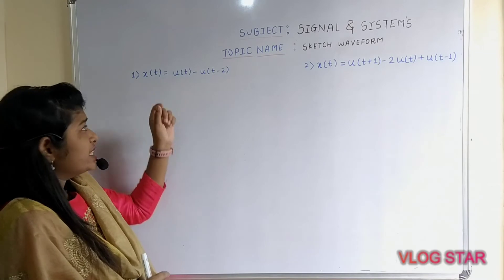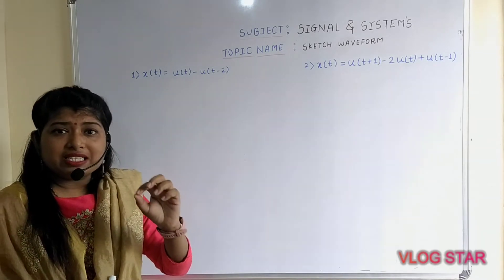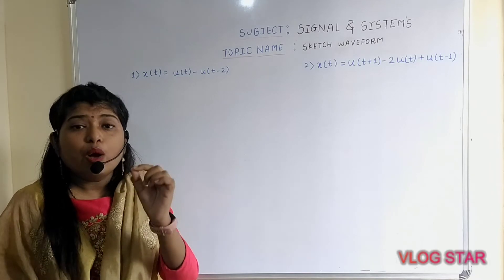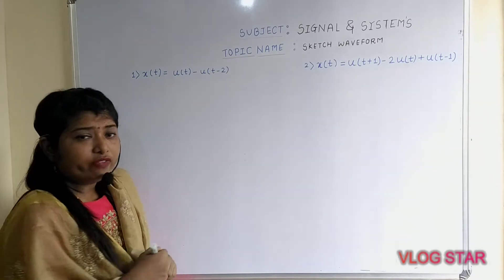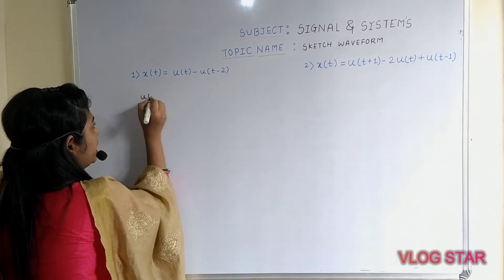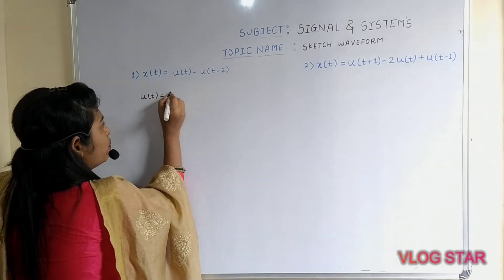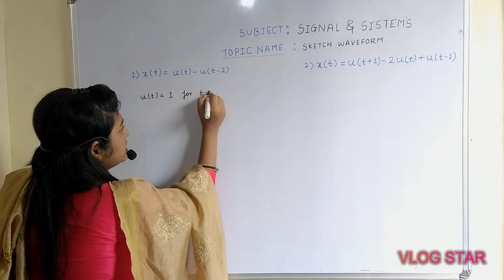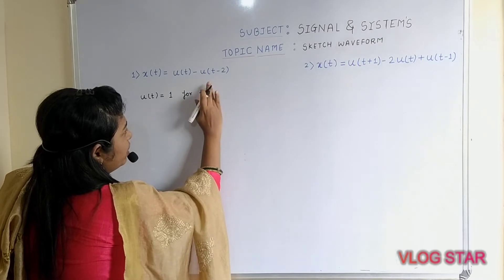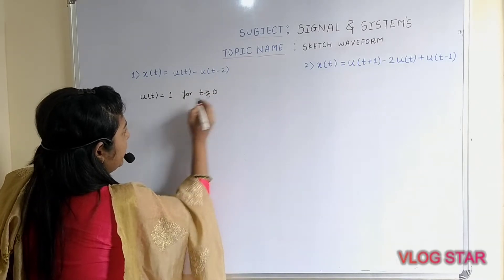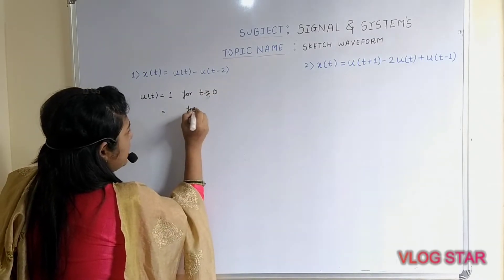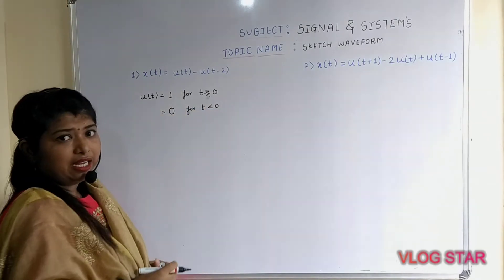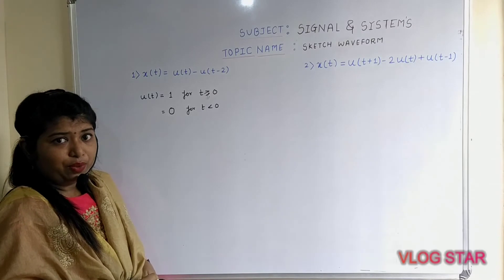Now, as this is u(t), what does it indicate? u(t) is nothing but the unit step signal. The definition for u(t) is: u(t) = 1 for t ≥ 0, and if t < 0, the value of the unit step signal is 0.